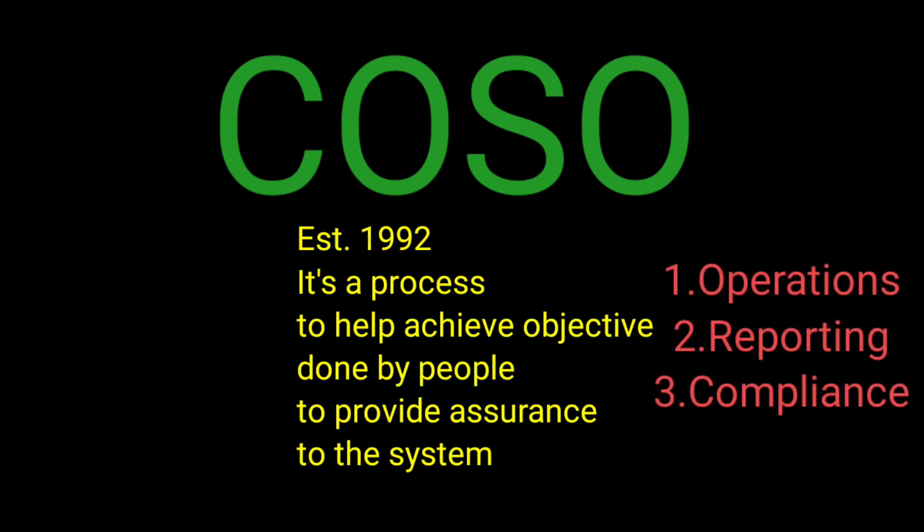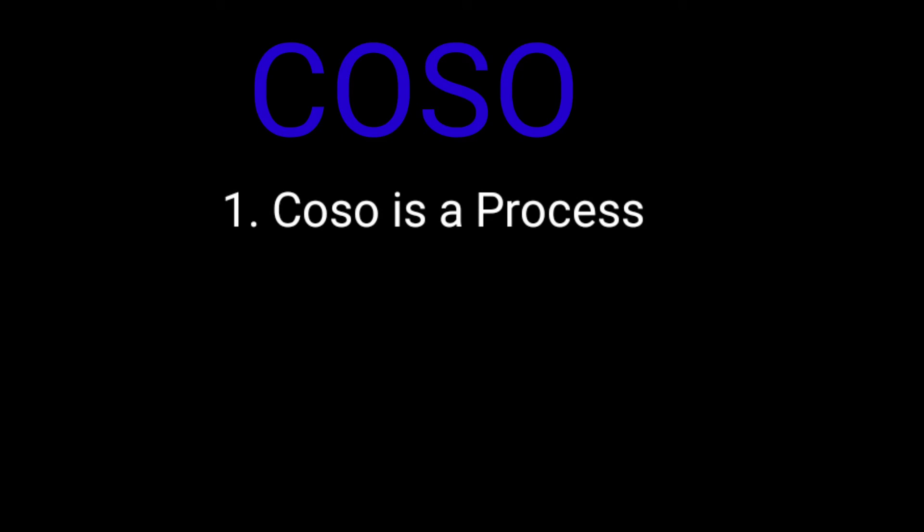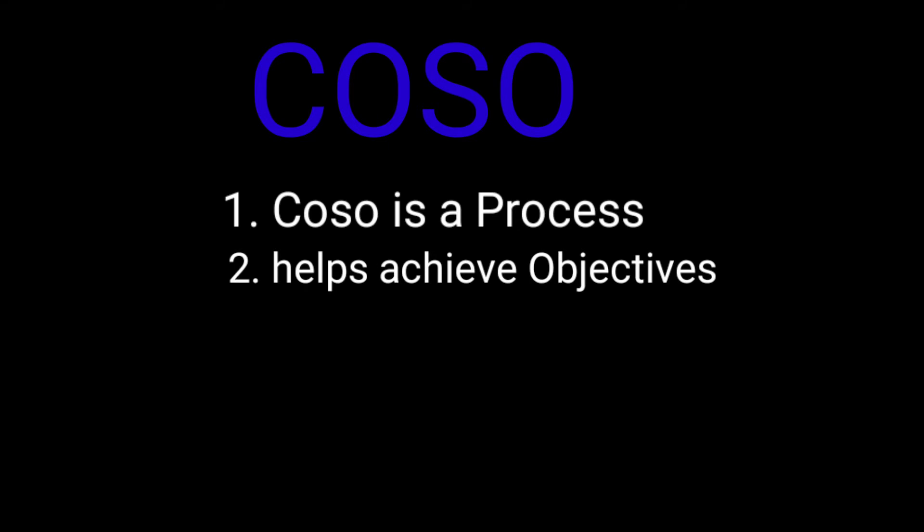This definition reveals five concepts regarding internal controls. Number one, it establishes that COSO is a process, not a destination. Number two, it helps organizations to achieve objectives. What are those objectives? Operational objectives, reporting objectives, and compliance objectives.